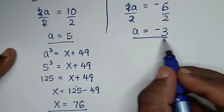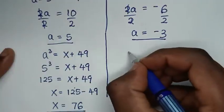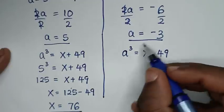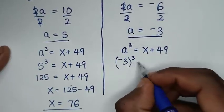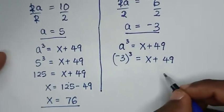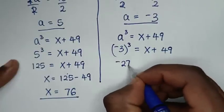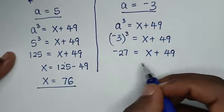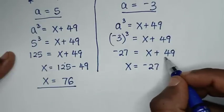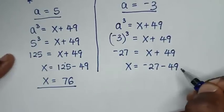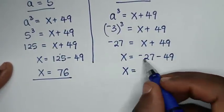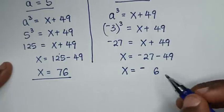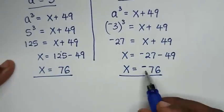For the second solution, a plus b equals negative 8: adding with a minus b equals 2 gives 2a equals negative 6, so a equals negative 3. Using a cubed equals x plus 49: negative 3 cubed is negative 27 equals x plus 49, so x equals negative 27 minus 49, which is x equals negative 76.